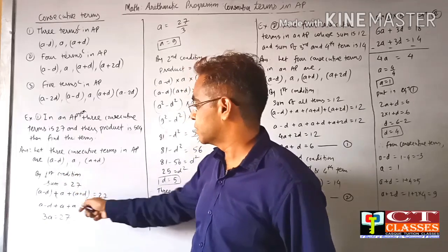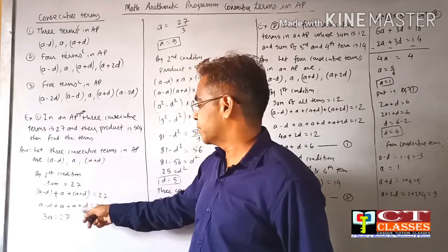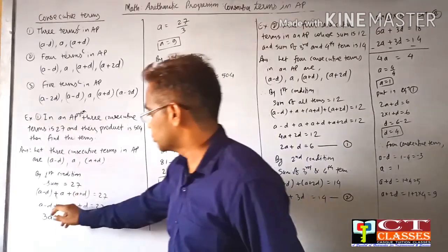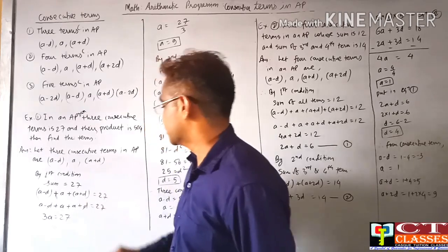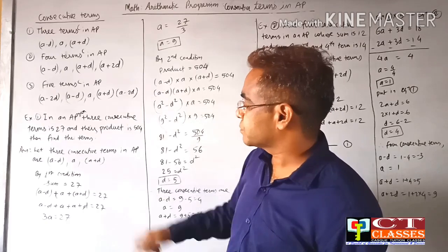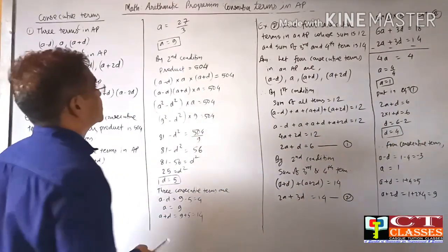Sum equals 27. So (a-d) + a + (a+d) = 27. The d terms cancel, giving 3a = 27. Therefore a = 9.